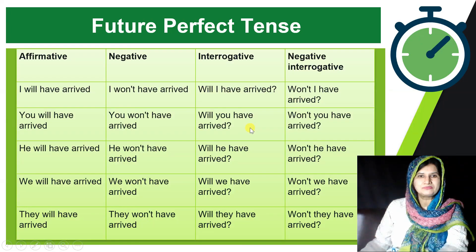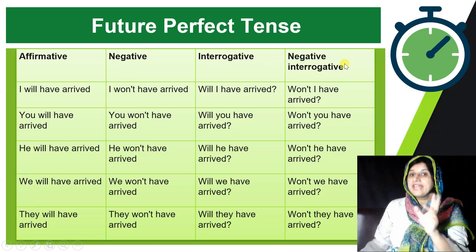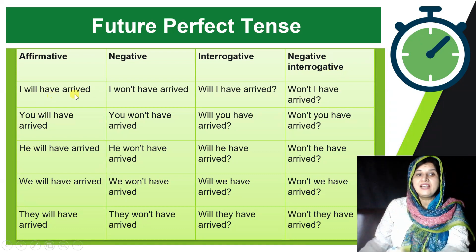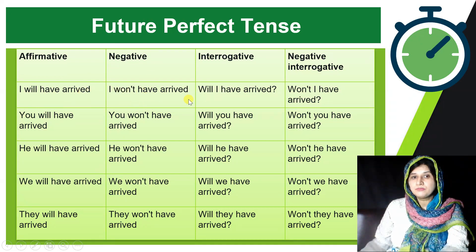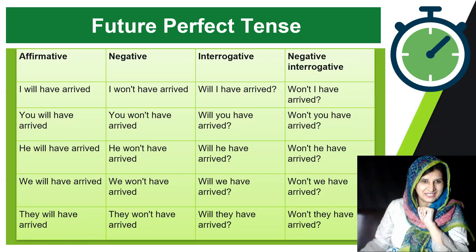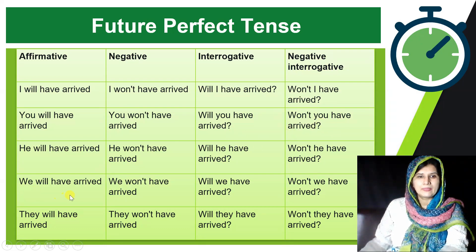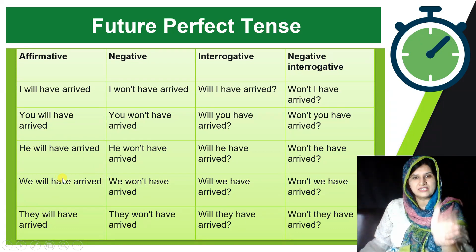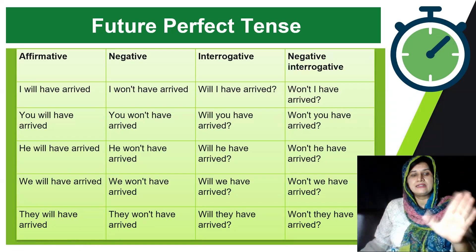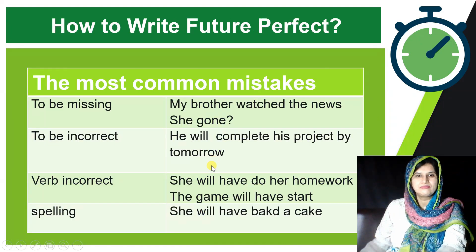Now let's practice with affirmative, negative, interrogative, and negative interrogative forms. Affirmative: 'I will have arrived.' Negative: 'I won't have arrived' or 'I will not have arrived.' Interrogative: 'Will I have arrived?' Negative interrogative: 'Won't I have arrived?' Similarly: 'You will have arrived,' 'You won't have arrived,' 'Will you have arrived?' 'Won't you have arrived?' Pause the video and read all the example sentences carefully.